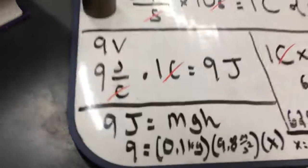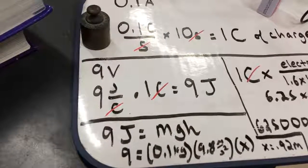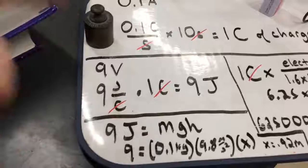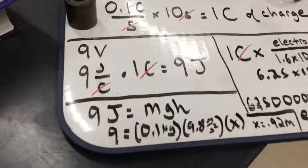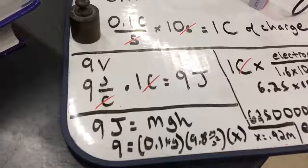And I thought we would take a look at that in terms of potential energy. How high would I have to lift this 100-gram mass in order to get 9 joules? It turns out not very high, 0.92 centimeters.